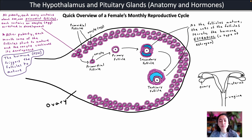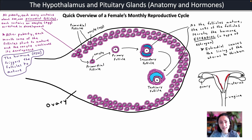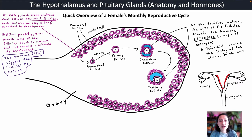The estradiol secreted by the maturing follicles enters the blood and targets cells in the uterus, causing the lining of the uterus to thicken. Every month a female menstruates and the lining of her uterus is shed, so it is the estradiol being secreted by the follicle cells that causes rebuilding and thickening of the uterine lining.